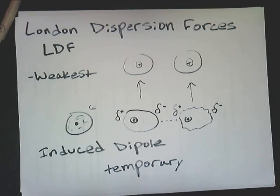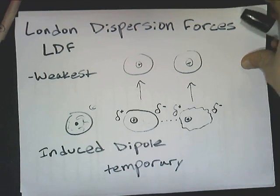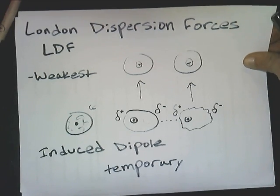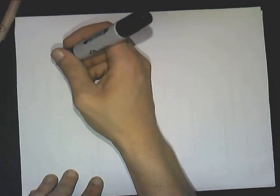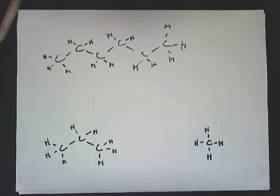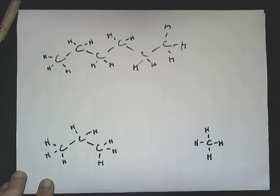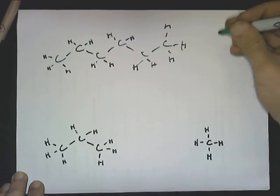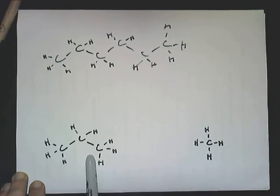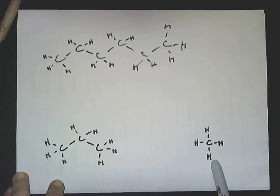So what can make a London dispersion force more interesting? It is going to be more powerful in larger molecules. If we look at these three different molecules, the main difference is their size. We have hexane up here, propane down here, and methane. The names aren't terribly important — what is important is their size.